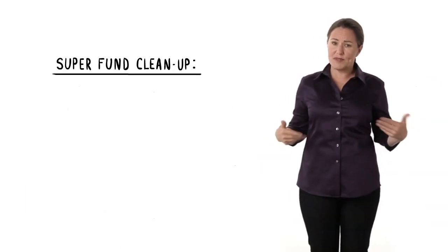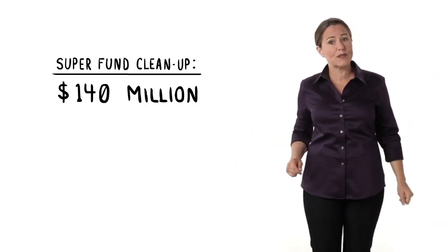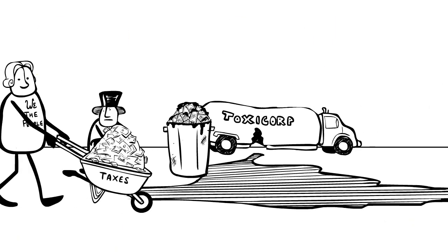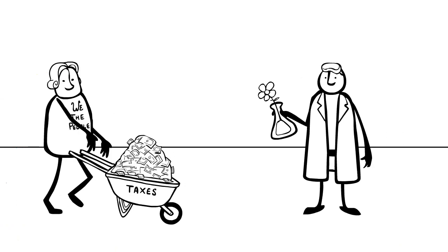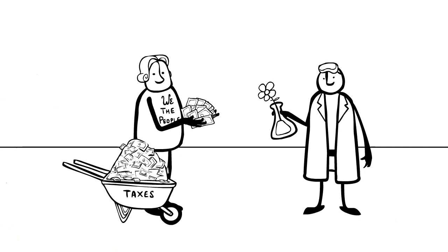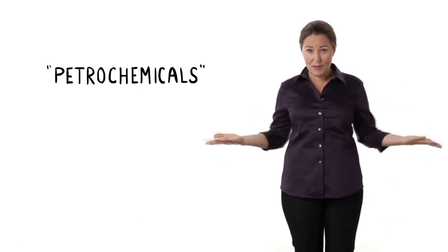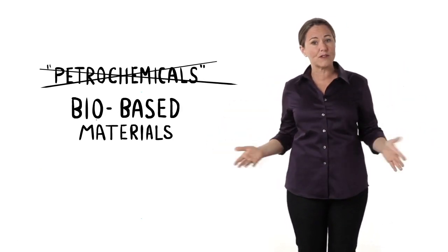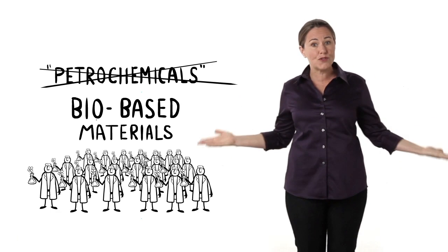The average cost of cleaning up a toxic Superfund site is 140 million dollars. Let's make the polluters pay and instead invest our money in developing safer materials so we don't have to worry about spills in the first place. Most chemicals today are made from oil, that's why they're called petrochemicals. Switching just 20% of them to safer, bio-based materials would create over 100,000 new jobs.